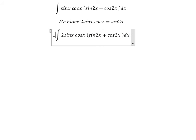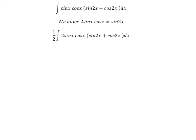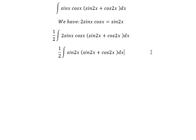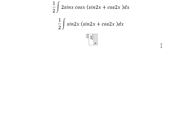We move about 1 over 2 outside: 2 sine x cosine x, you get sine 2x. Next we have 1 over 2 multiply with the integral of sine 2x square plus sine 2x cosine 2x dx.